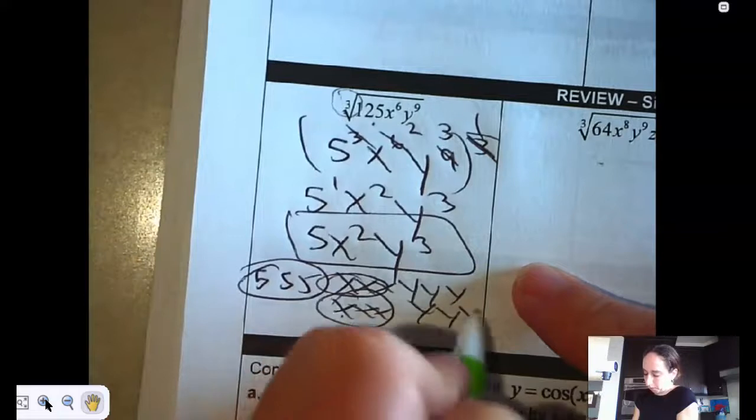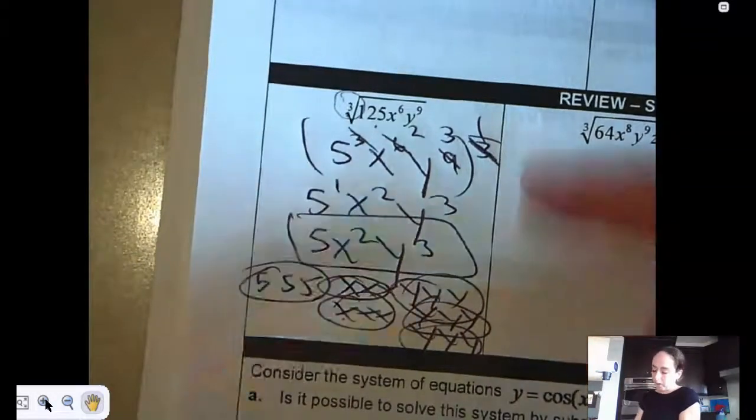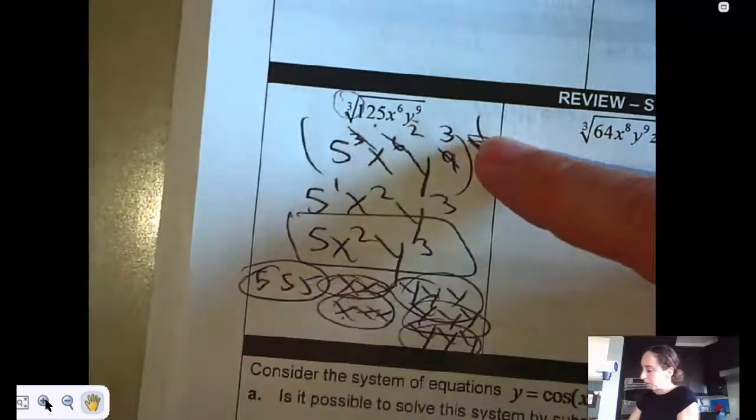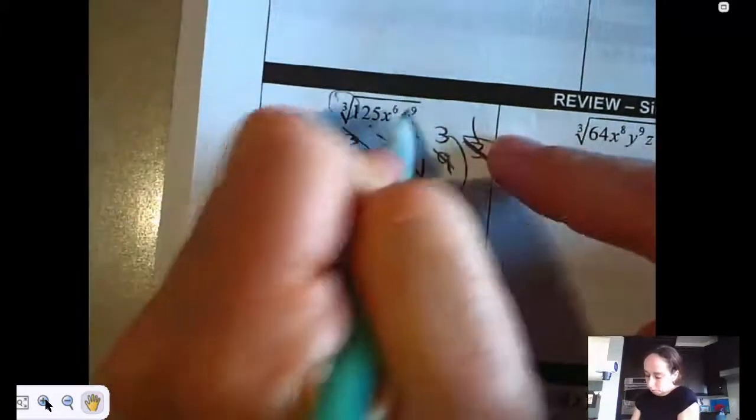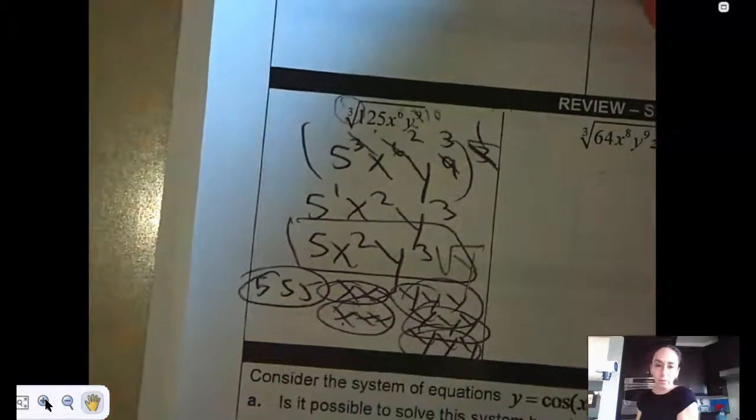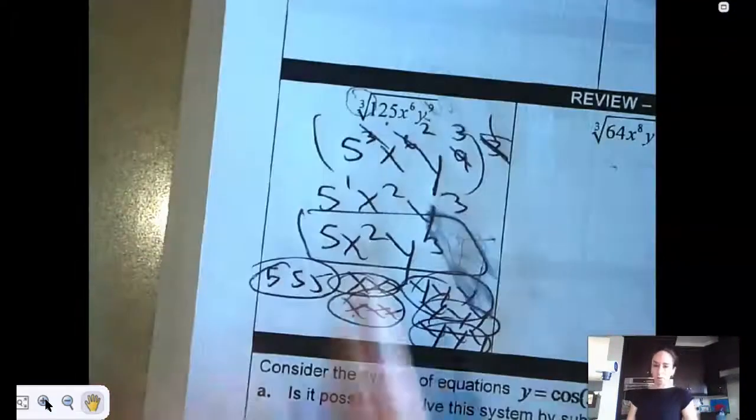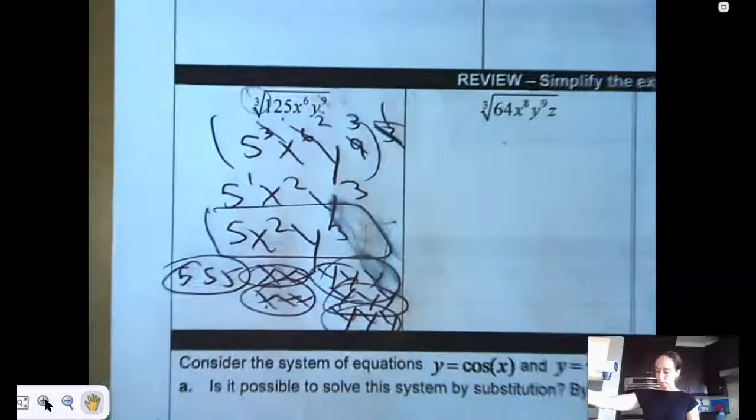For the y's, 3 piles. If it was y to the 10th, your answer would also be cube root of y because you would have one left over.